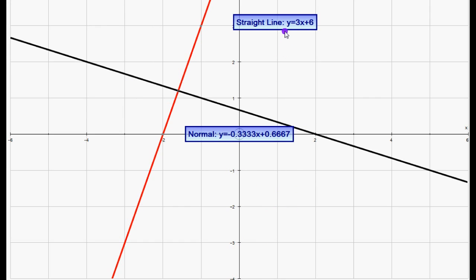Now let's have a look at the relationship between these two. We can see here y equals 3x plus 6 is the equation of this line and y equals minus 0.33x plus 0.666. So this is minus 1 third and this is 2 thirds.